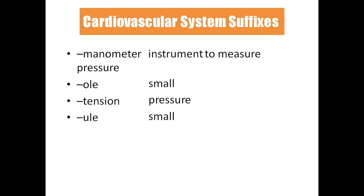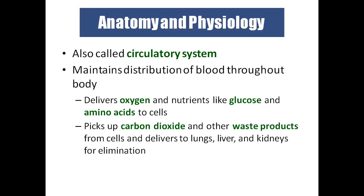A manometer is an instrument used to measure pressure — for example, a sphygmomanometer is used to measure blood pressure. The suffix '-ole' or '-ule' means small — for example, arteriole means smaller artery, venule means smaller vein. 'Tension' means pressure — hypertension is increased blood pressure, hypotension is decreased blood pressure.